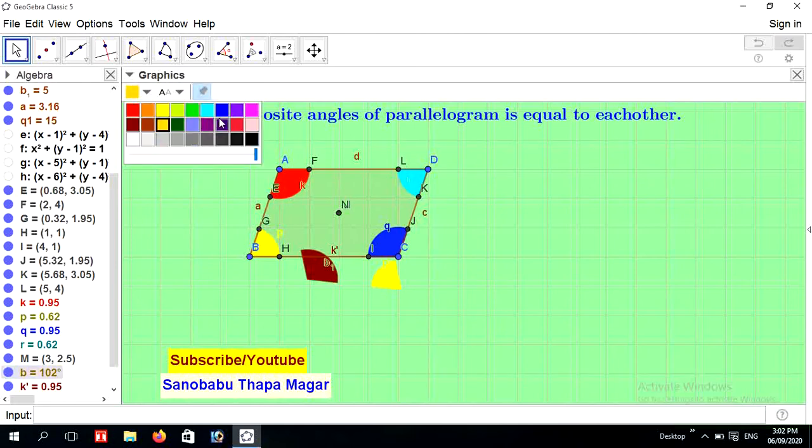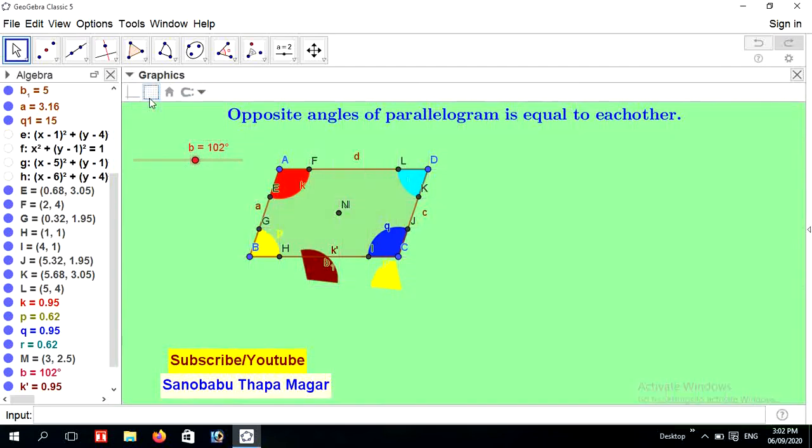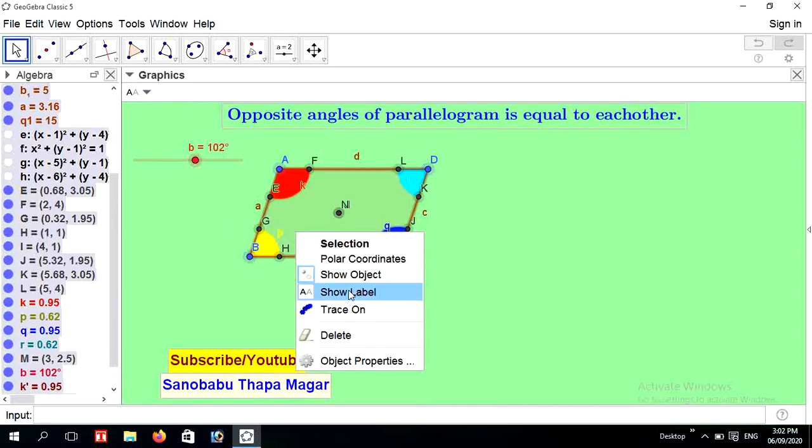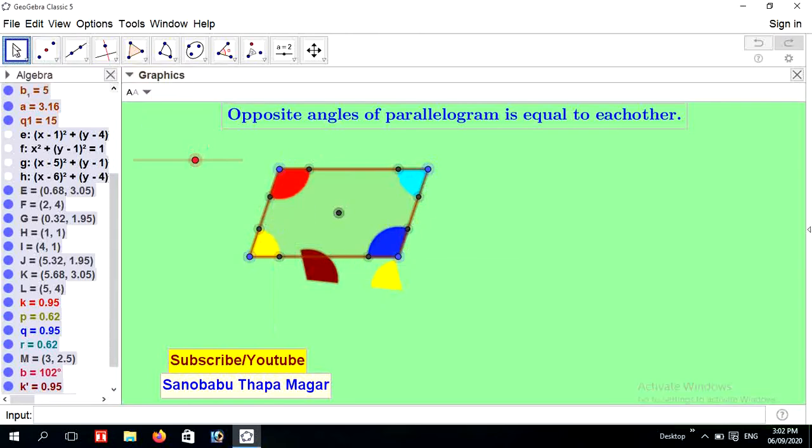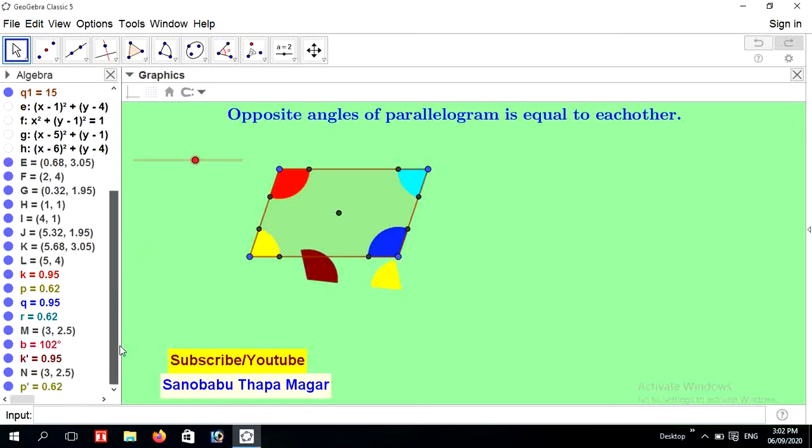Now I'm recoloring it. All select and show label. Now it looks very nice. And hide the point M and N. Now it looks very nice.